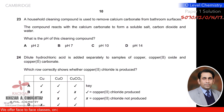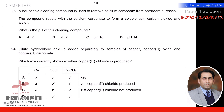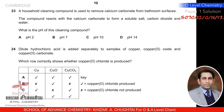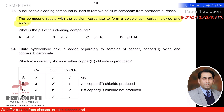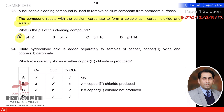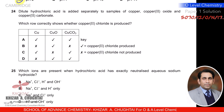Question twenty-three: a household cleaning compound removes calcium carbonate from bathroom surfaces, reacting to form a soluble salt, carbon dioxide, and water. This indicates the compound is an acid, since acids react with carbonates to produce CO₂, salt, and water. The pH of this cleaning compound must be less than 7. So A is the correct option (the only acidic pH shown).